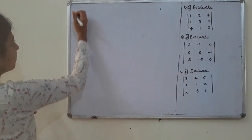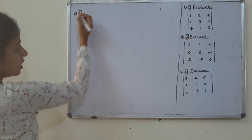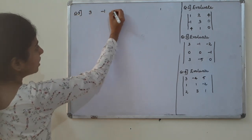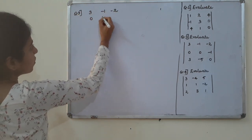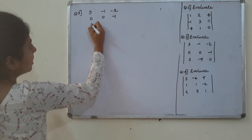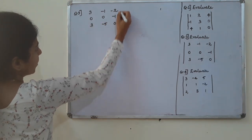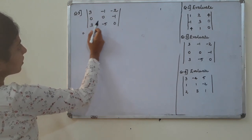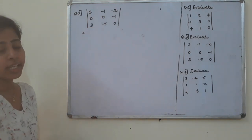Question number 3: the matrix entries are 3, minus 1, minus 2, 0, 0, minus 1, 3, minus 5, 0. Here we will see the row contains zeros.